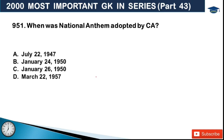First question: when was the national anthem adopted by the Constituent Assembly? Option A: July 22, 1947. Option B: January 24, 1950. Option C: January 26, 1950. Option D: March 22, 1957. The answer is option B, January 24, 1950 - that is when the national anthem (Rashtriya Sangeet) was adopted.